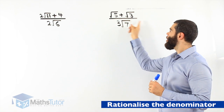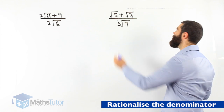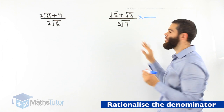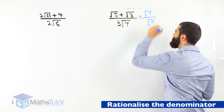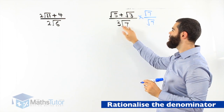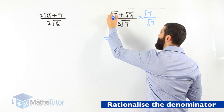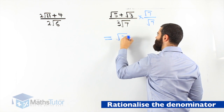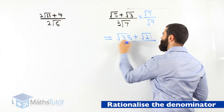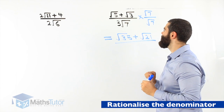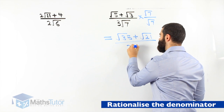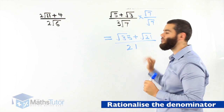Root 5 plus root 3, all over 3 root 7. We have an irrational denominator and we want to rationalize it. We multiply by the surd in the denominator: root 7 over root 7. We multiply the numerators together and the denominators together. Root 5 times root 7 is root 35, plus root 3 times root 7 is root 21. For the denominator: root 7 times root 7 is 7, and 7 times the 3 is 21. We have rationalized the denominator — the denominator is the rational number 21.